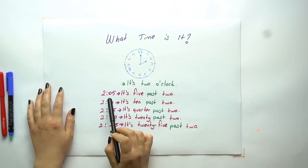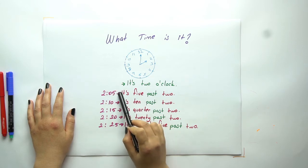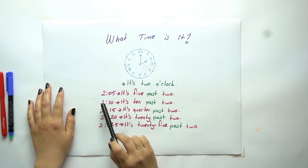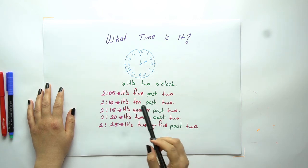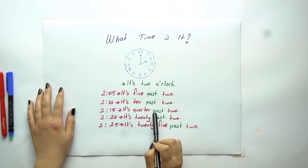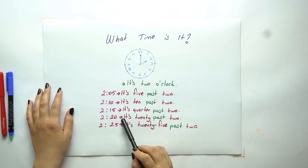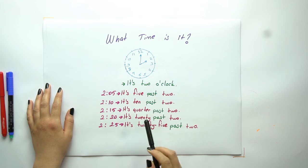First one, look at this time — what time is it in this example? It's 5 past 2. Next one, what time is it in this example? It's 10 past 2. Another one, the time is quarter past 2. Next one, it's 20 past 2. And our other example: the time is 25 past 2.